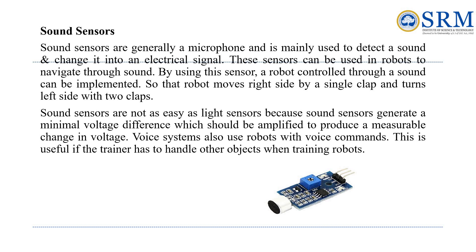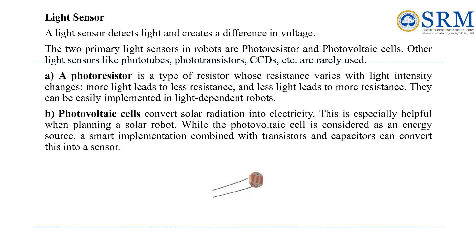Voice-controlled robots can be handy when you need to train a robot while doing other tasks. Next, light sensors detect light and generate an electrical signal. Robots primarily use two types: photo resistors and photovoltaic cells.